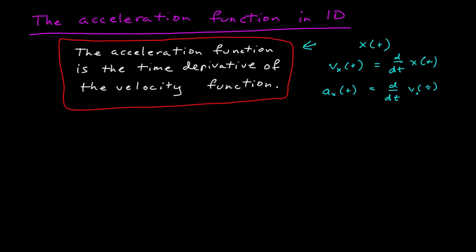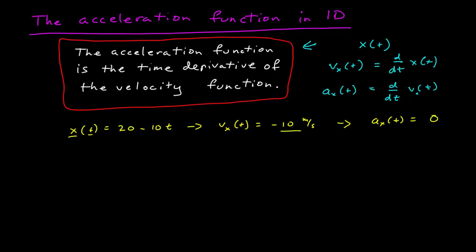So if we know the position function, then we can calculate both just by calculating the derivatives. Let's do a couple of easy examples. If I have a position function equal to 20 minus 10t, I can differentiate that to find the velocity function of time. The constant term gives 0, leaving minus 10, which is in meters per second. If position is in meters and time is in seconds, then the velocity is in meters per second. And I can differentiate this again to get the acceleration as a function of time, which is then 0, because this is a constant and the derivative of a constant is 0.